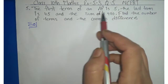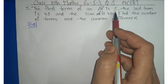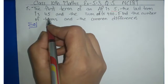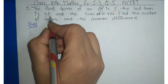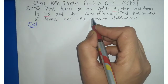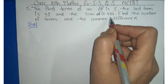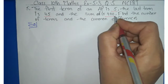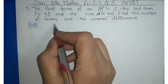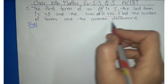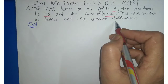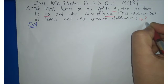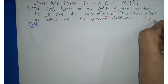AP की first term 5 है, last term given है 45, and the sum is 400. Sum 400 है। हमें number of terms find out करनी है और common difference find out करना है।